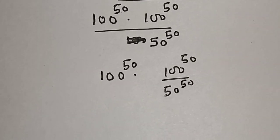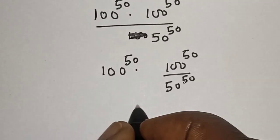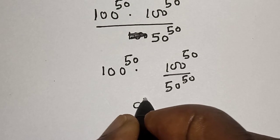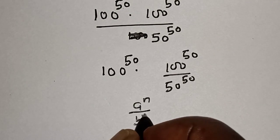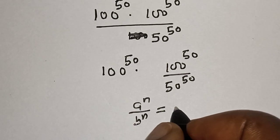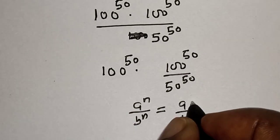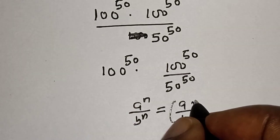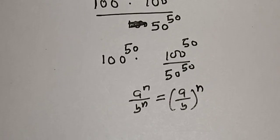Remember this rule: if you have A raised to power N over B raised to power N, this is equal to A over B raised to power of N.